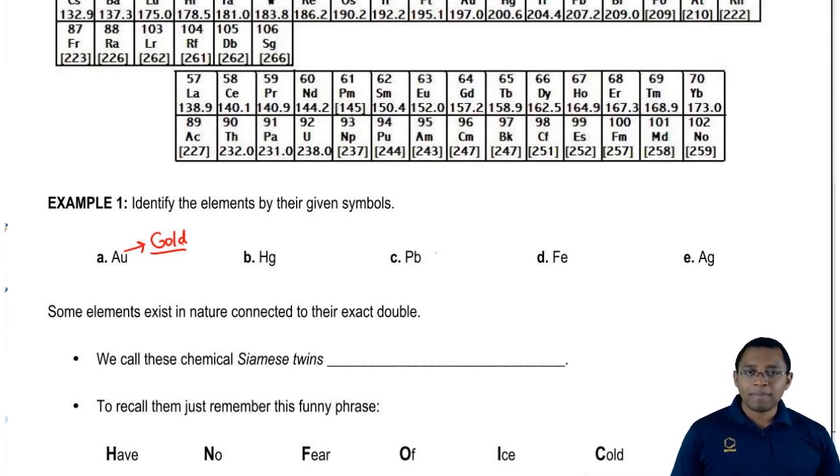Hg you tend to find in older type of thermometers and barometers. We're going to say that here, Hg is just mercury.